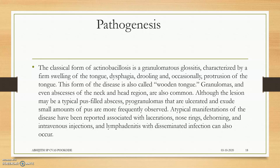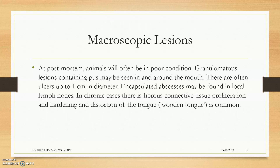The pathogenesis: the classical form of actinobacillosis is granulomatous glossitis — that is, infection of the tongue. It is characterized by firm swelling of the tongue, dysphagia, drooling saliva, and occasionally protrusion of the tongue, due to loss of innervation. There will be pyogranulomatous, pus-filled abscesses, lacerations, and lymphadenitis in the nearby glands. The macroscopic lesions are mainly in the tongue and upper pharyngeal region.